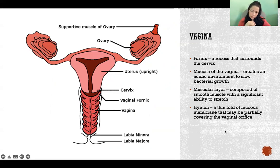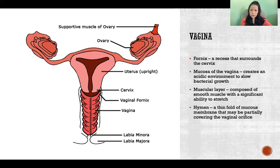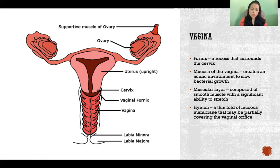The mucosa of the vagina creates an especially acidic environment, to slow bacterial growth and prevent infection. It also makes a hostile environment for sperm, which is why semen has very alkaline substances to help combat the acidic environment and keep the sperm alive. The muscular layer of the vagina is made of smooth muscle and has an extreme ability to stretch to accommodate intercourse and childbirth.